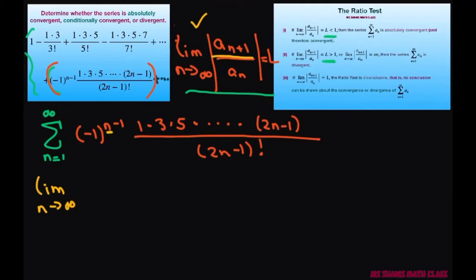So everywhere there's an n, you're going to put n plus 1. So this is going to change to negative 1 to the power of just n, because you put n plus 1 minus 1 here. So that's just going to give you n.